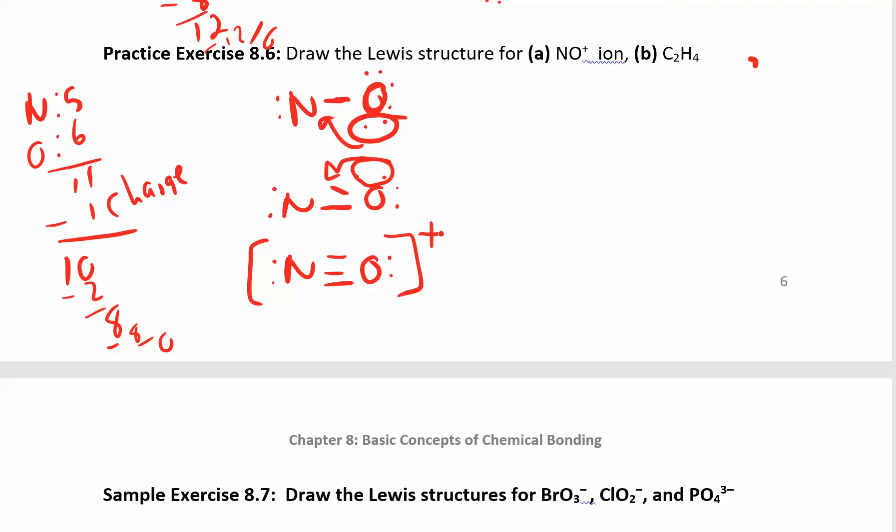For C2H4, carbon loves to bond with another carbon, and you want to make everything look as symmetric as possible. Carbon has four electrons times two gives me eight electrons. Hydrogen has one electron each, I have four of them, so I have four total, that gives me twelve electrons. I already used up ten electrons, so I have two electrons left over. All the hydrogens are happy, this carbon has six, this carbon has six.